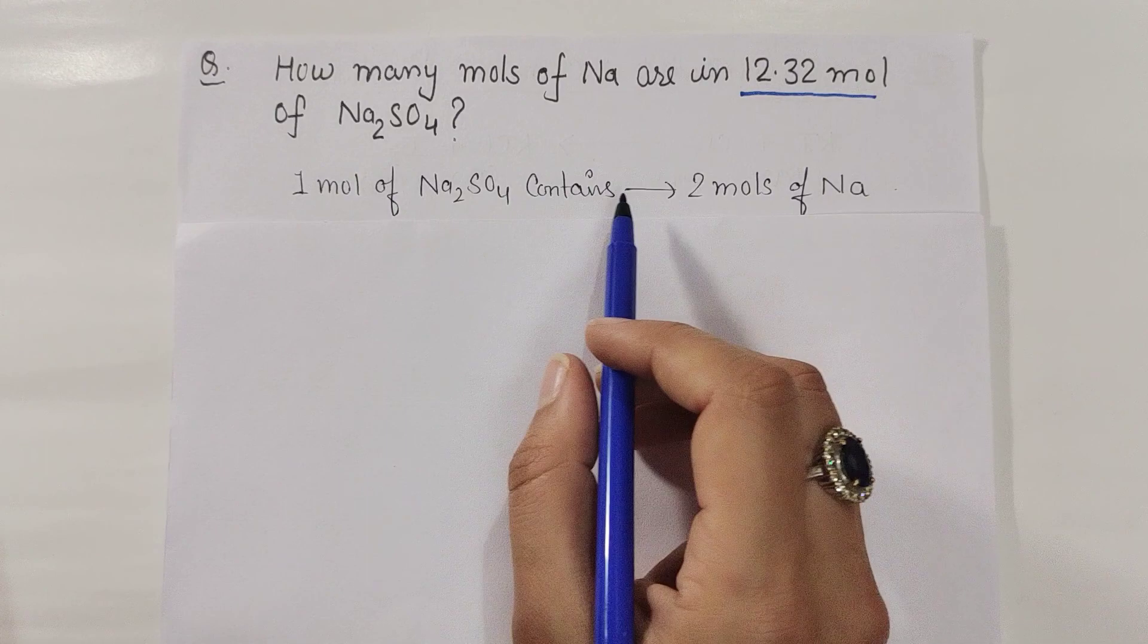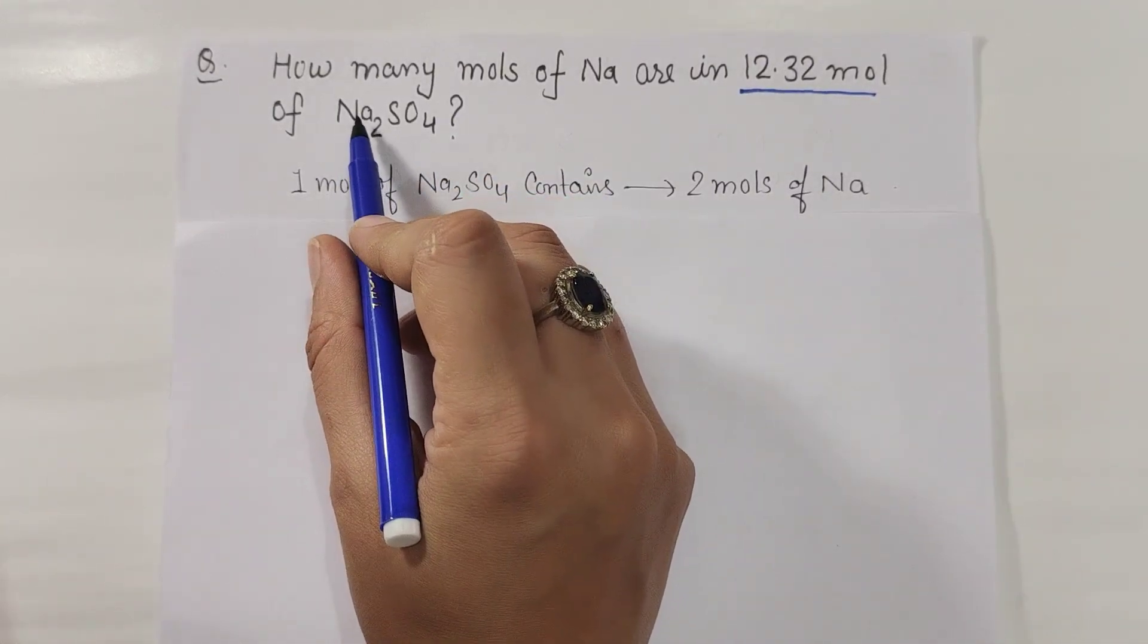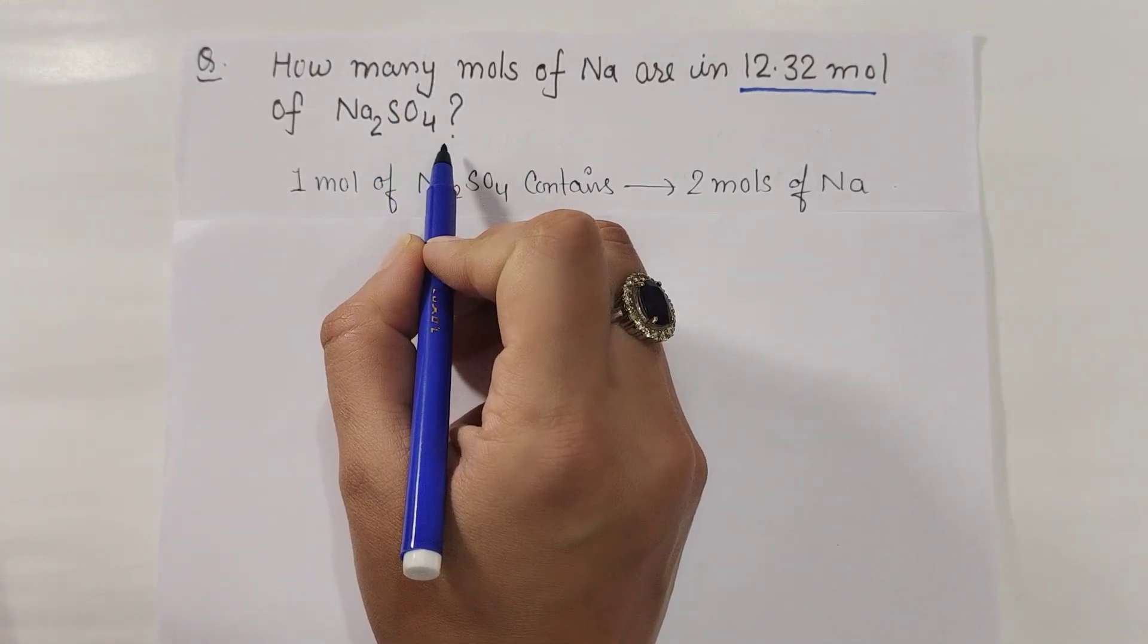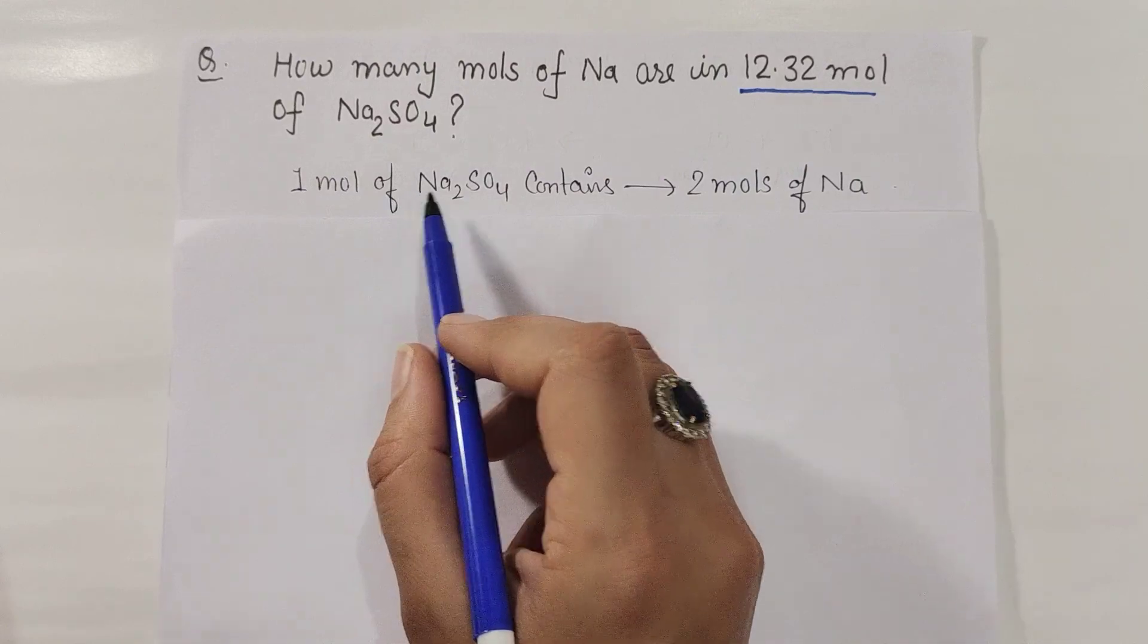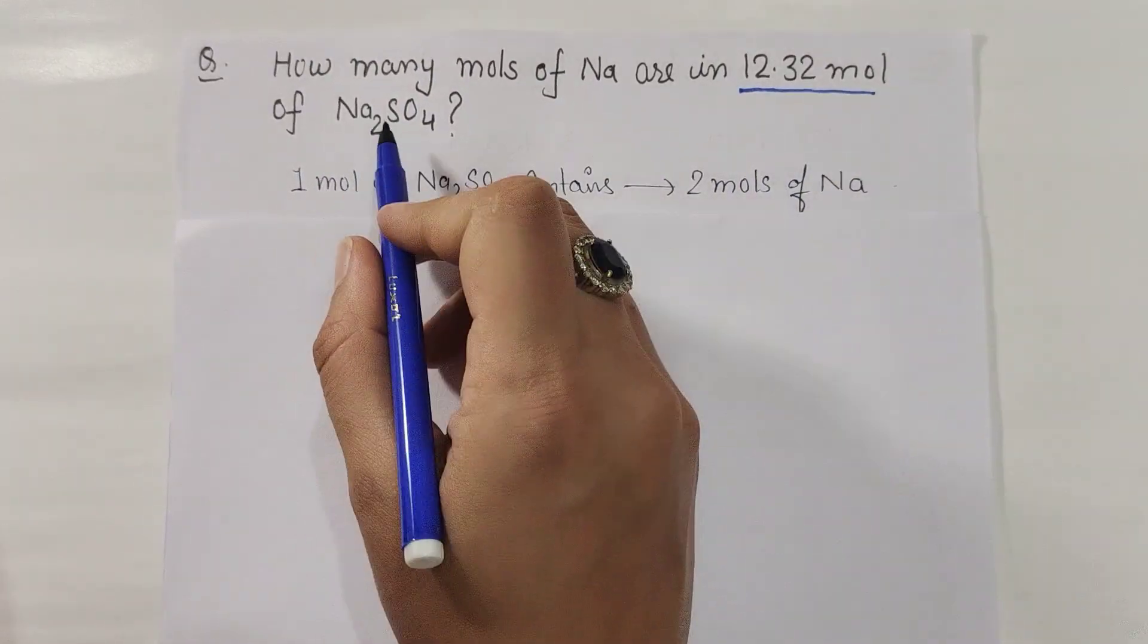Then how many moles will be Na? How many moles of Na are in 1 mole? 2 moles of Na. If you see the sulfate, then only 1 mole of sulfate is present. So 1 mole of Na2SO4 contains 2 moles of Na, which we know from the formula.